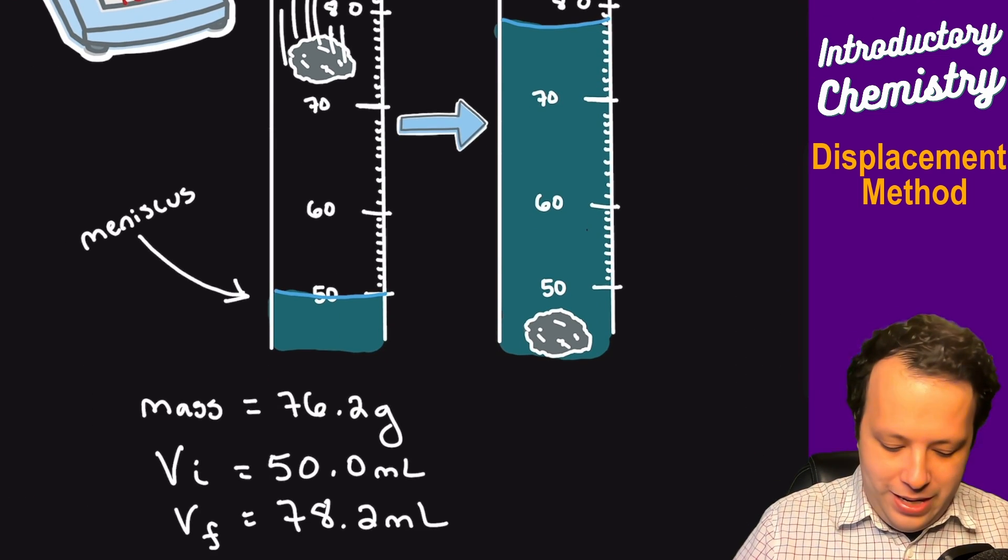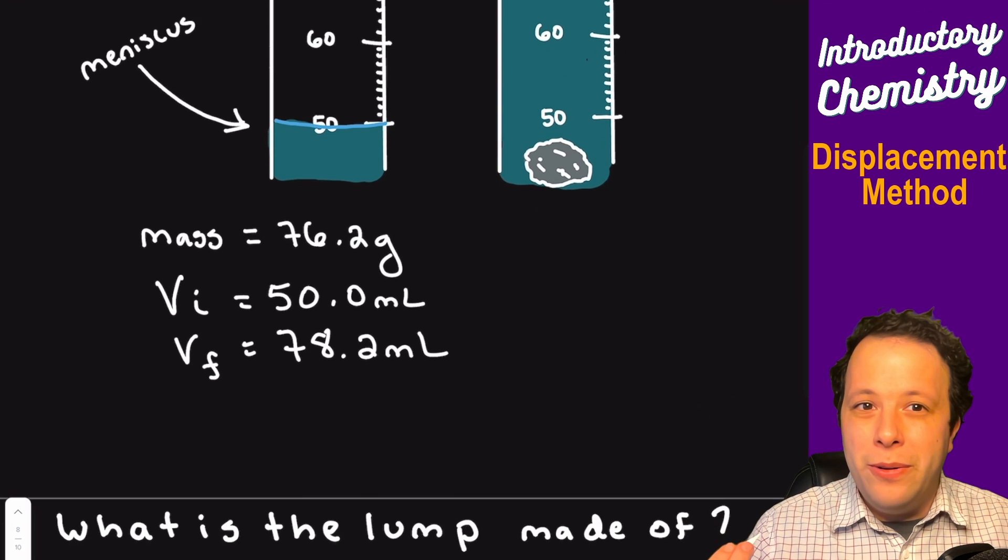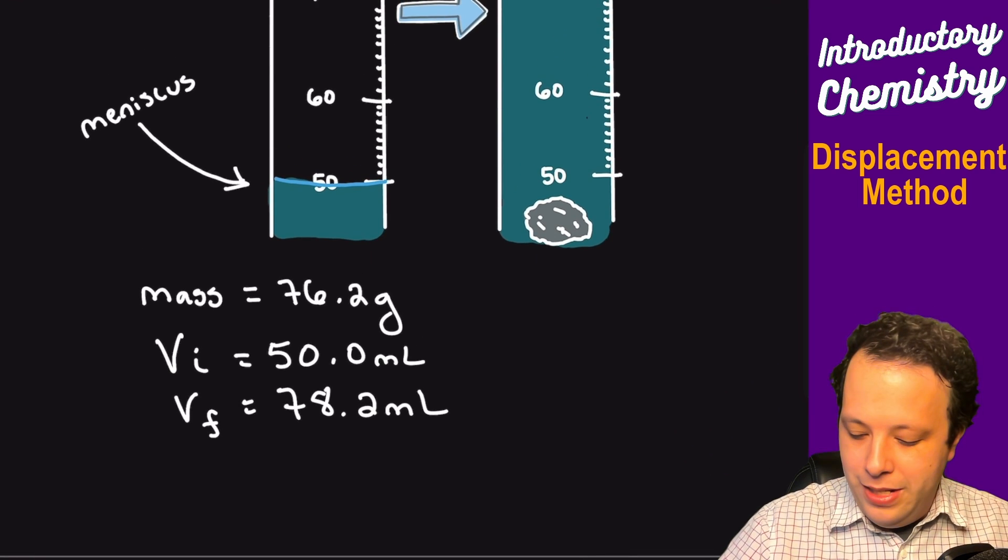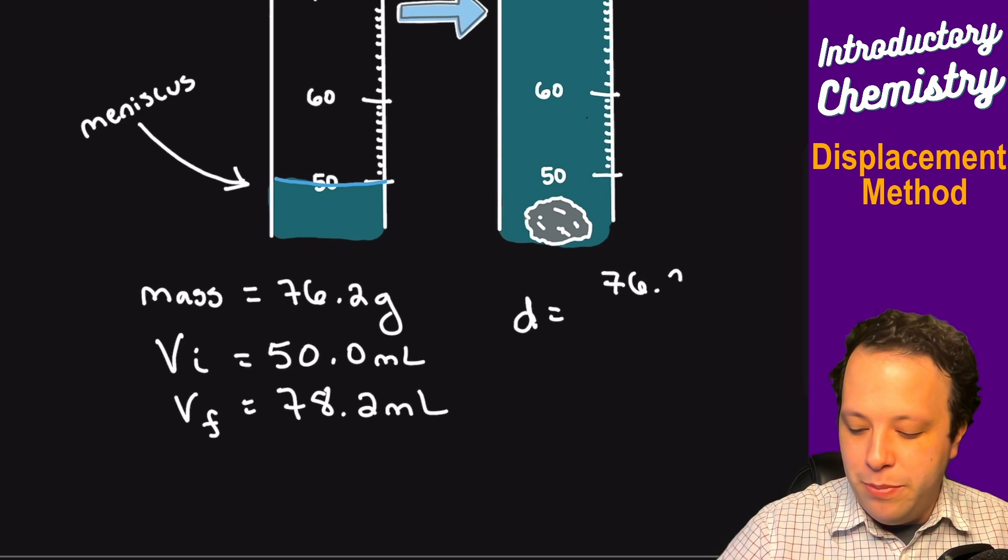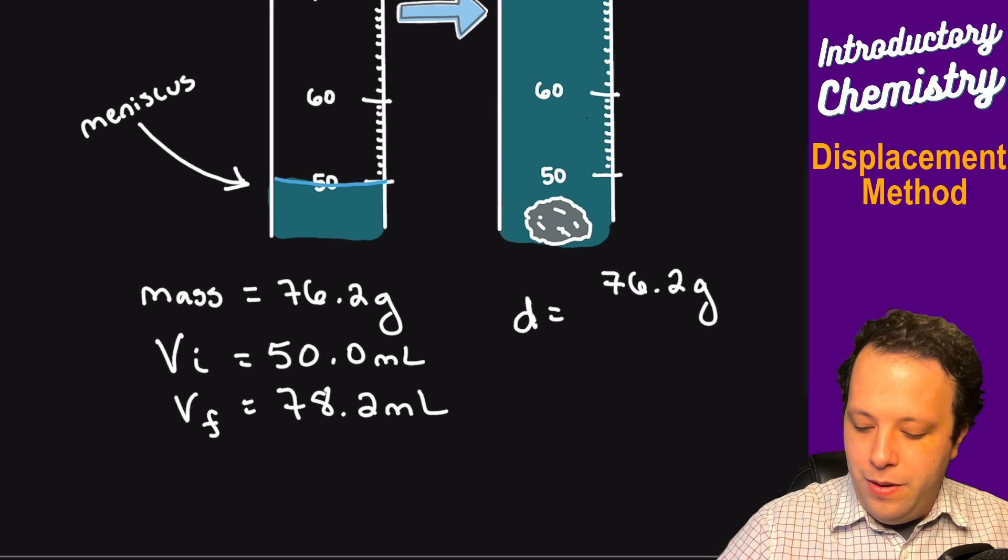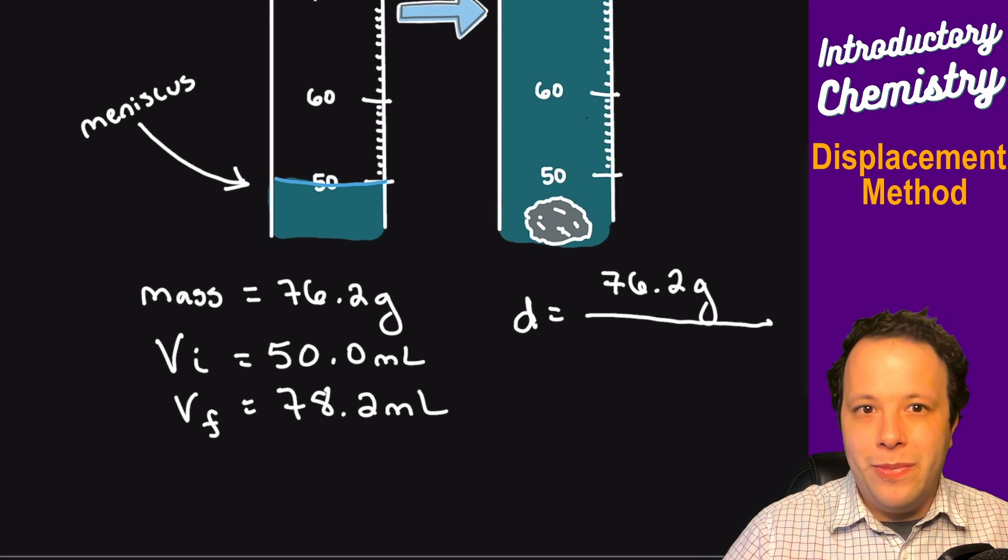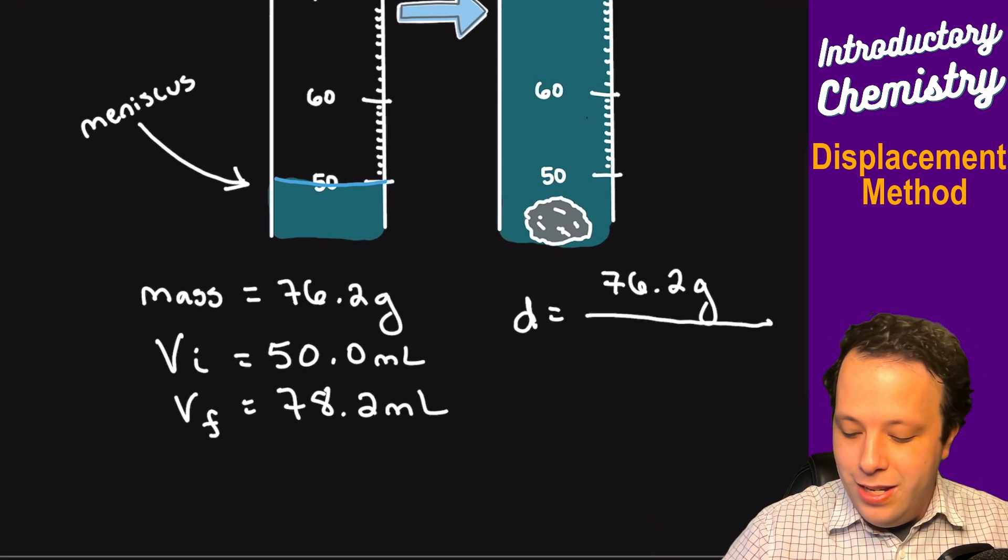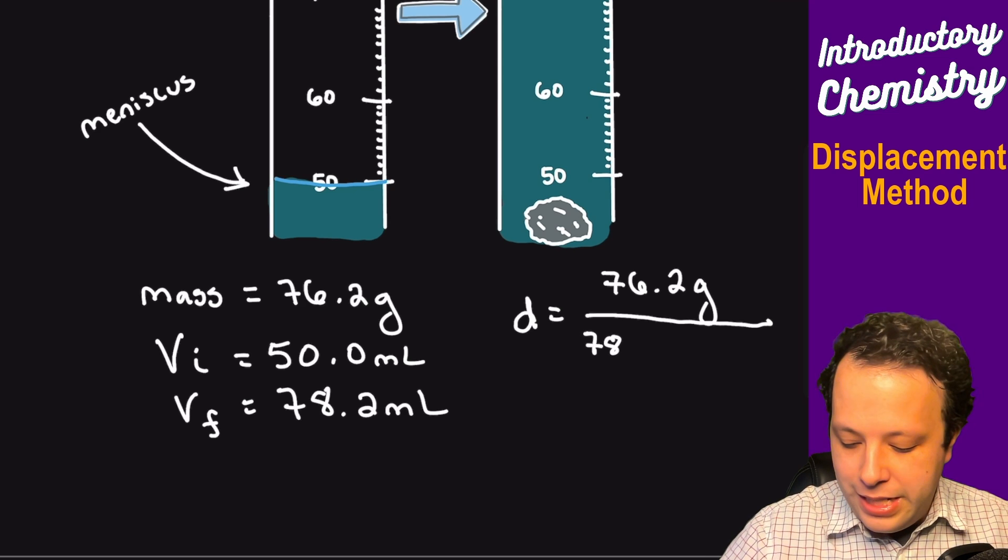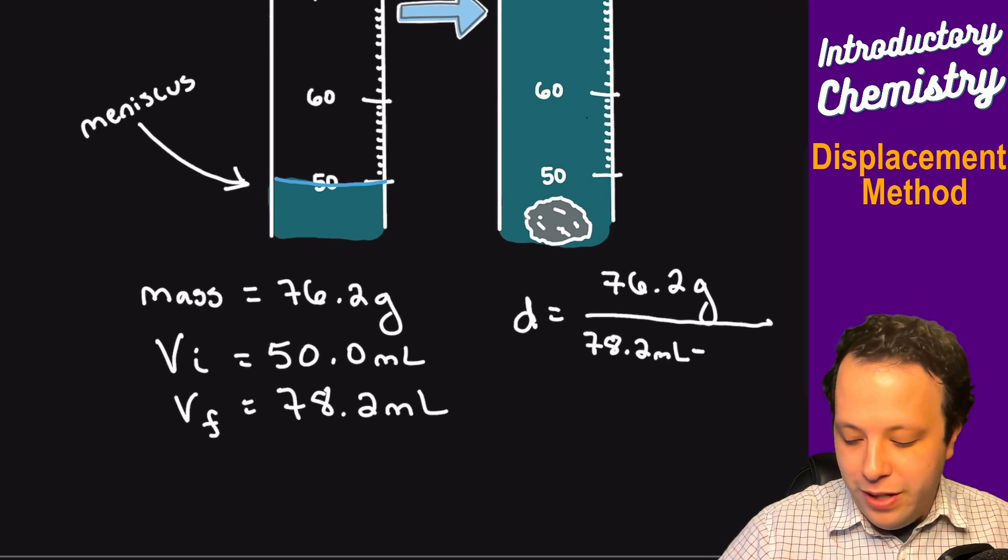Okay, now how are we going to put this into our formula? So density is equal to mass, so that's 76.2 grams, all over the volume, which we have to do final minus initial. Don't forget that. That's probably one of the most common mistakes students make is they forget to subtract your two volumes.